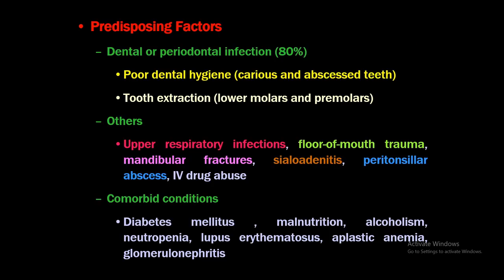The predisposing factors: dental or periodontal infection accounts for around 80% of all cases — poor dental hygiene, caries, abscessed teeth, and tooth extraction of lower molars and premolars. Other causes include upper respiratory tract infections, floor of mouth trauma, fish bones, mandibular fractures, peritonsillar abscess, and IV drug abuse. Note that cellulitis per se is not the cause of Ludwig's angina — it is a separate entity. Comorbid conditions like diabetes mellitus, malnutrition, alcoholism, neutropenia, lupus erythematosus, aplastic anemia, and glomerulonephritis may predispose due to immunocompromised status.